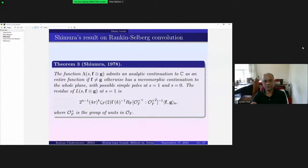Then you have this residue at s equals one. So it involves the regulator here and you have the Dedekind zeta function special value at two, and then this is the totally positive units inside the square of the units, and this is the Petersson inner product. This is a result of Shimura which gives you the residue at one.